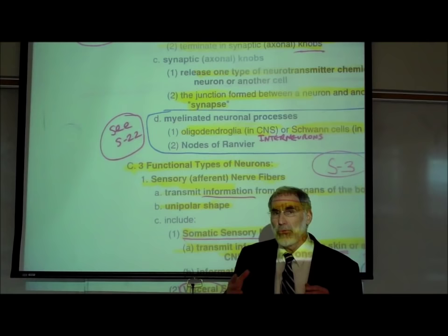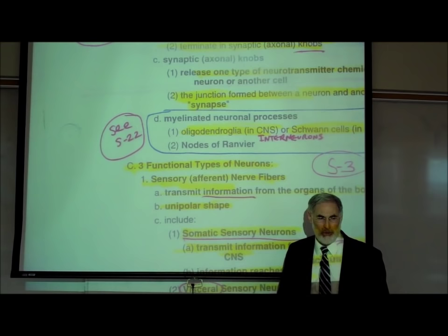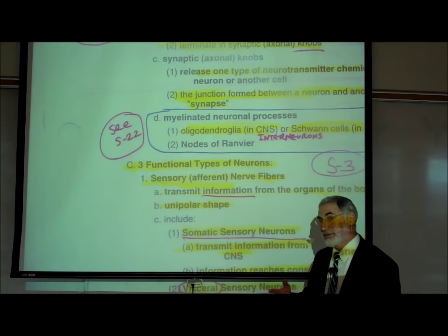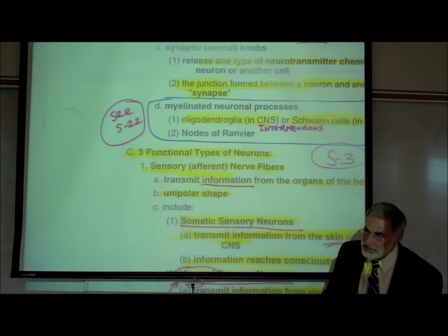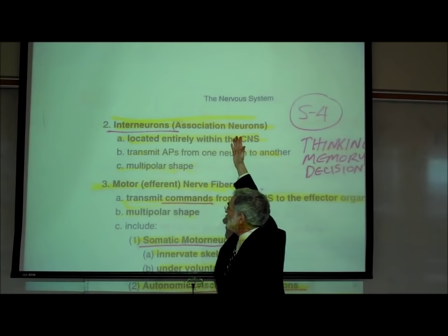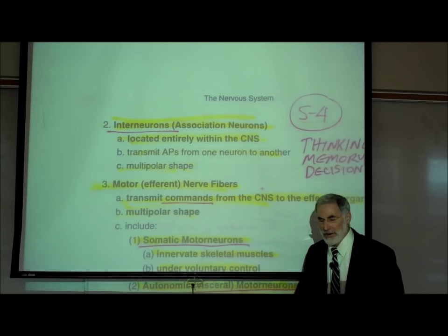We now want to talk about the functional categories of neurons. We divide neurons into three major functional types based upon their function. Number one, sensory or afferent neurons. Number two, interneurons or association neurons. And the third class are called motor neurons or efferent neurons. Those are the three functional classes.